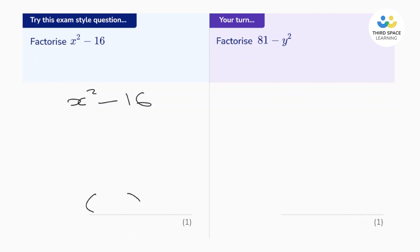Let's open up a pair of double brackets. Let's square root the first term — the square root of x squared is x, so let's put an x at the start of both brackets. Next, let's square root the second term, 16. The square root of 16 is 4, so let's put a 4 at the end of both brackets. Finally, we put a plus in one and a minus in the other — the order doesn't matter. We have fully factorized this expression using the difference of two squares, and that's worth one mark.